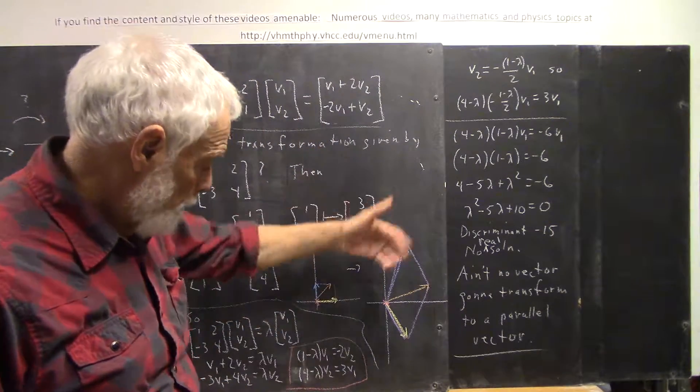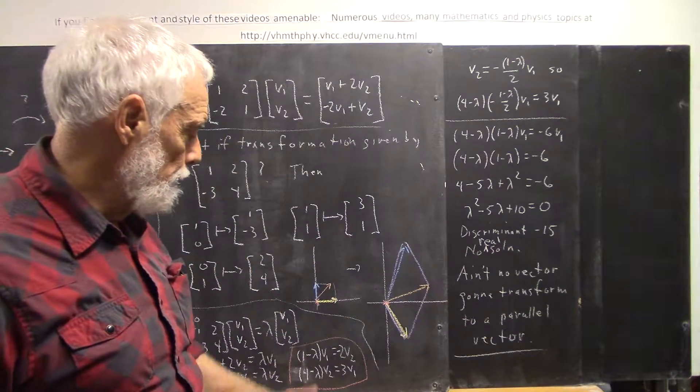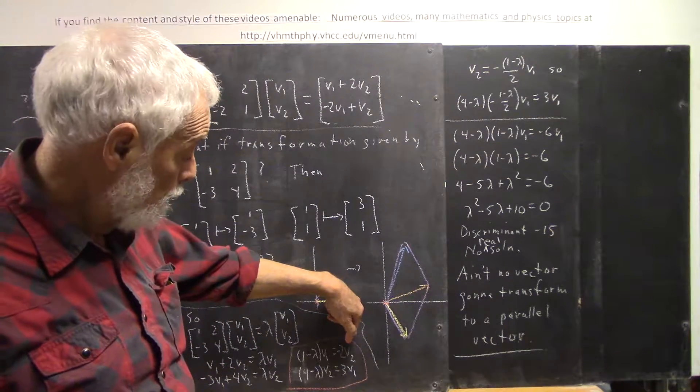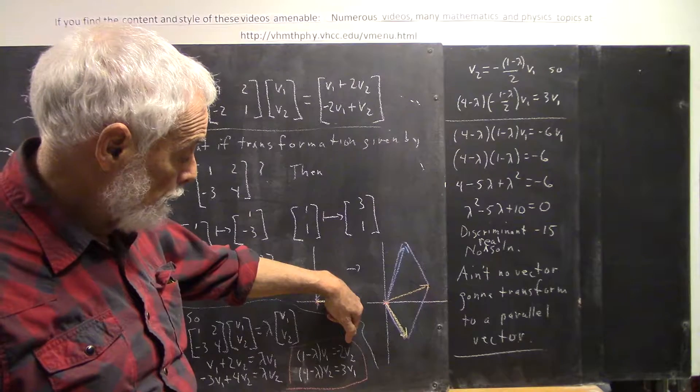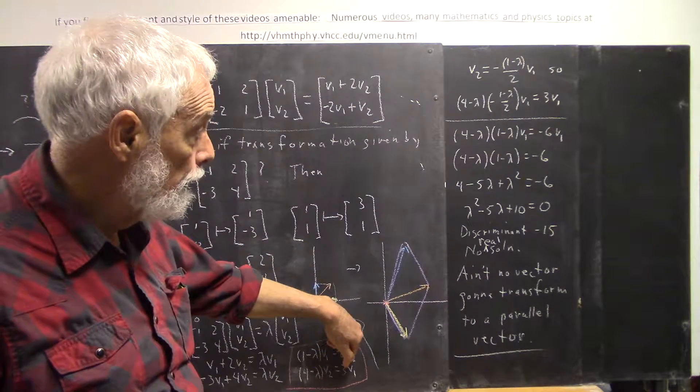And to show that this system can be solved or can be translated into something meaningful to give us an answer to our question. We take the first equation and we solve it for v2, and then we're going to substitute that v2 here, and then we'll have an equation in just lambda and v1.